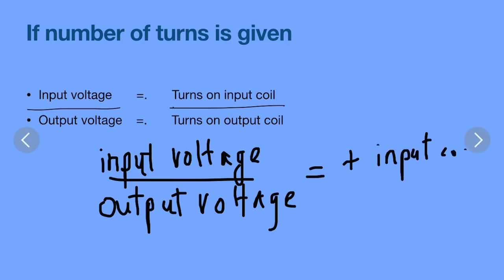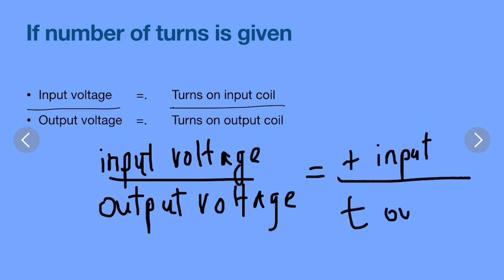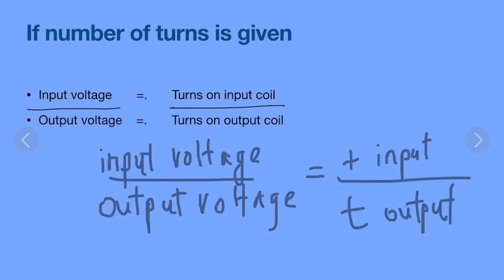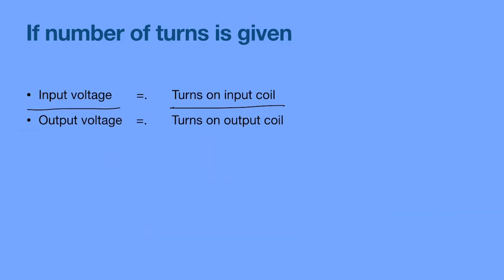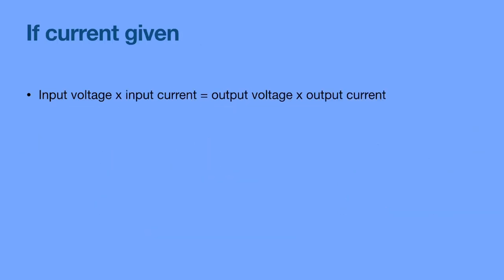The input coil is the primary coil and the output coil is the secondary coil. If current is given, the second equation is: input voltage multiplied by input current equals output voltage multiplied by output current.